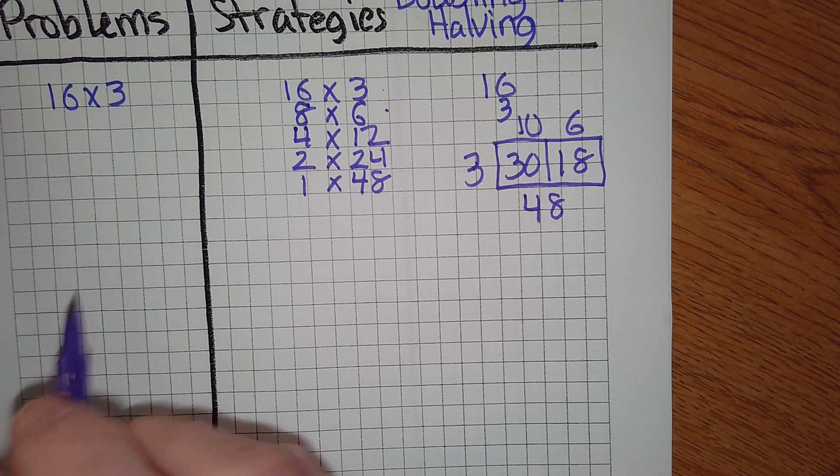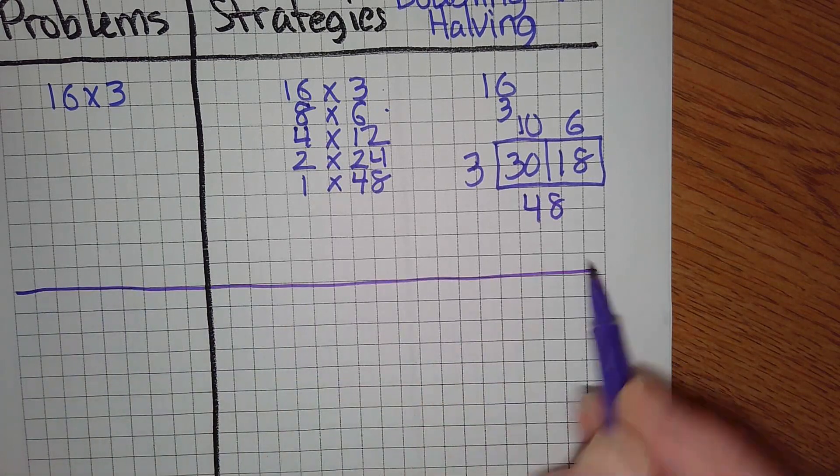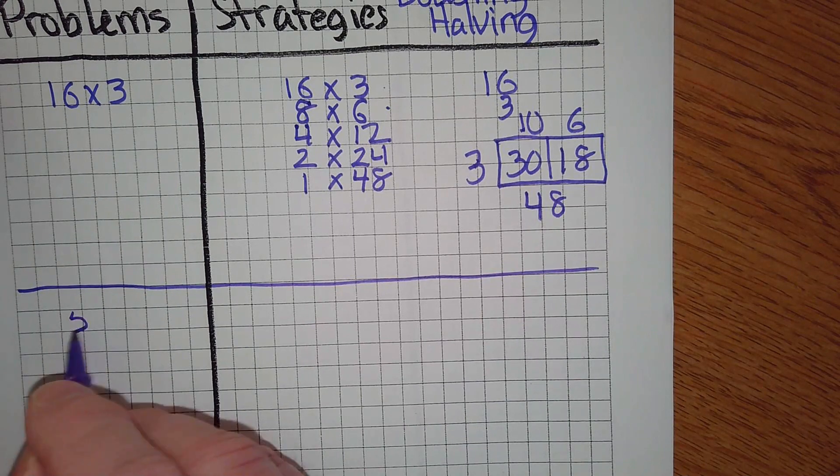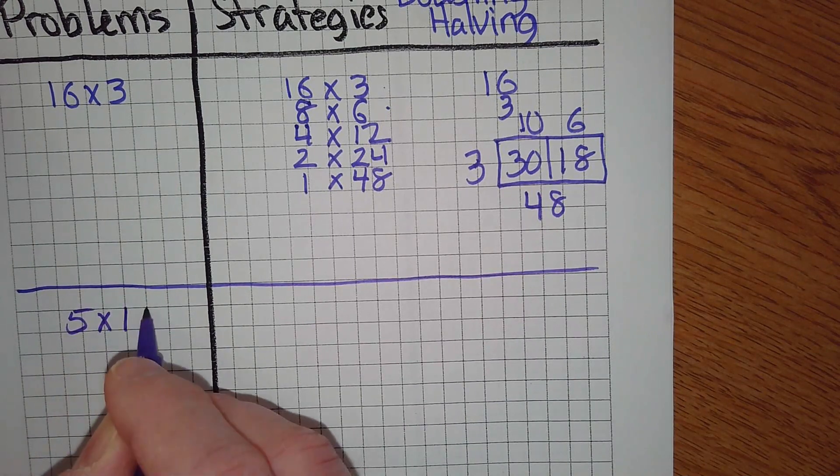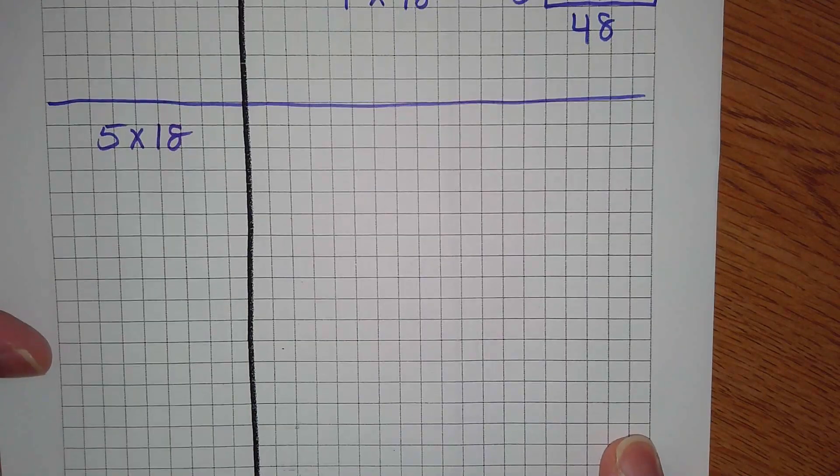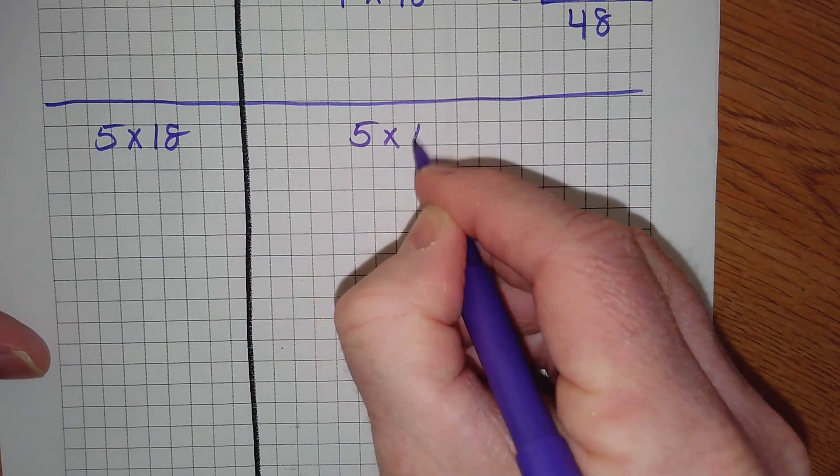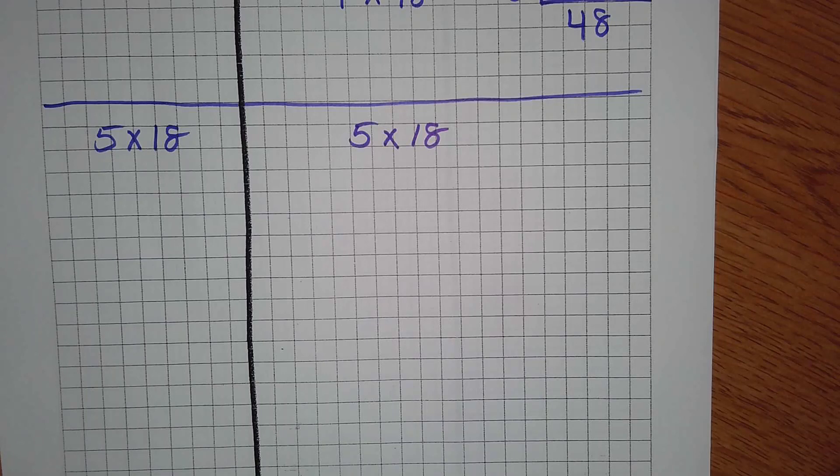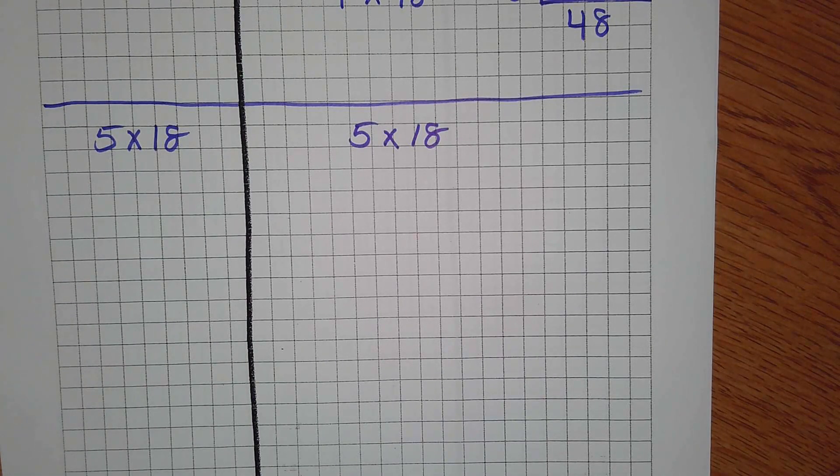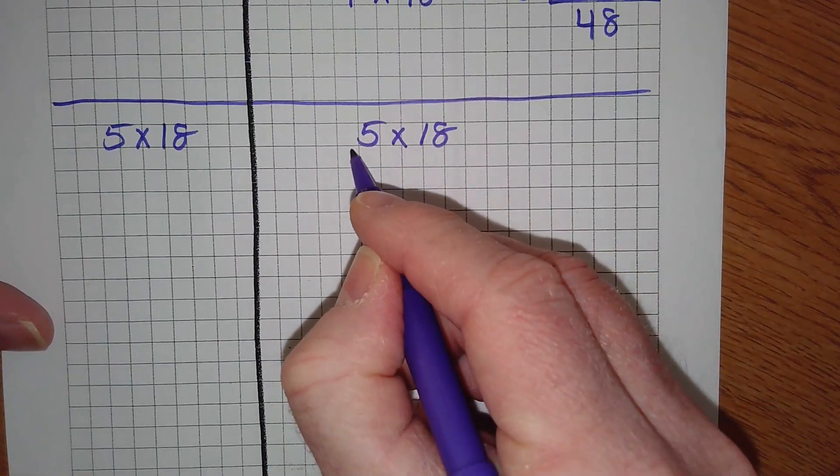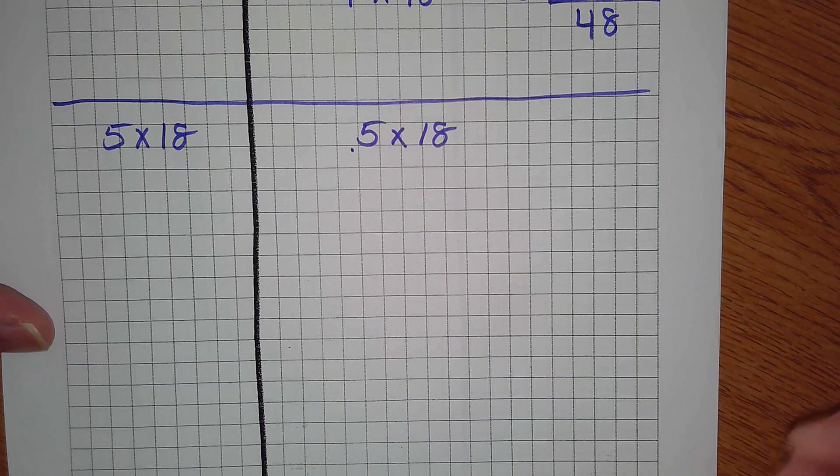Let's try another one. Let's see, how about 5 times 18? Who can double and half us all the way to the solution for this one? Tell us which one you're doubling and halving and what you get. Keep on going. Tell us what you're doubling and halving and what you're getting.